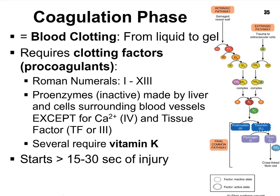Another way of referring to clotting is coagulation. Again, this is part of hemostasis. Hemostasis consists of first the vascular phase, which allows for the platelet phase to kick in, and as those two phases are going, we see the coagulation or clotting phase kick in. This is when our blood transforms from a liquid to more of a gel-like substance. This requires, in addition to the two prior phases, clotting factors — also referred to as procoagulants. There are a total of 13 of these procoagulants.